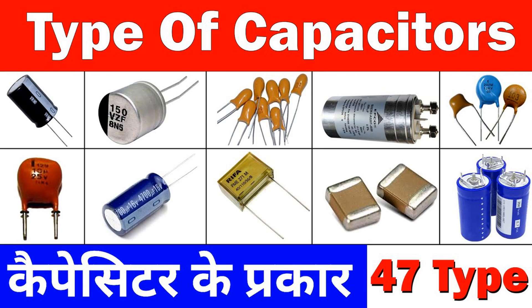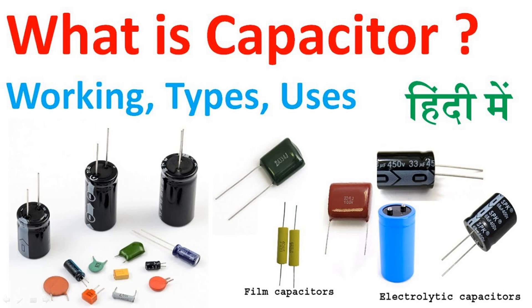Capacitors are commonly used for filtering and smoothing in electronic circuits, particularly in power supply applications. The primary purpose is to reduce or eliminate variations in voltage, resulting in a more stable and constant DC voltage. Here's how capacitors achieve filtering and smoothing.